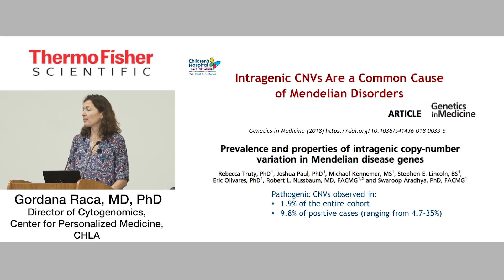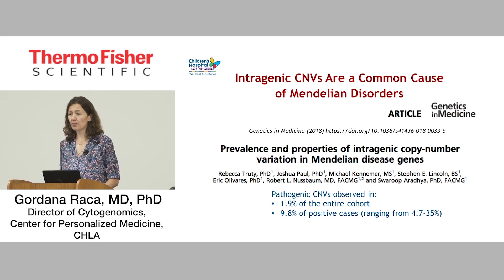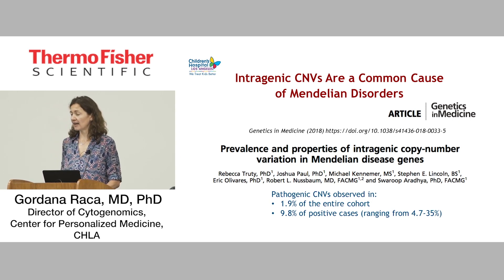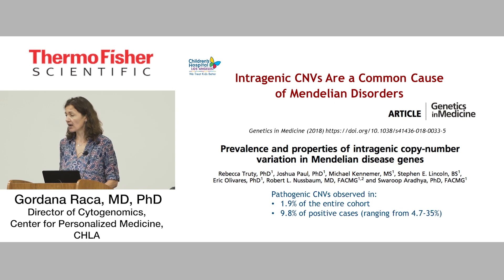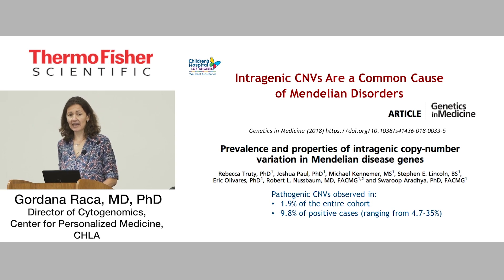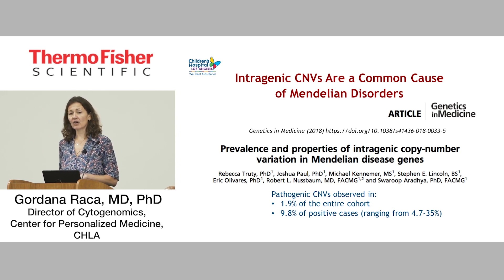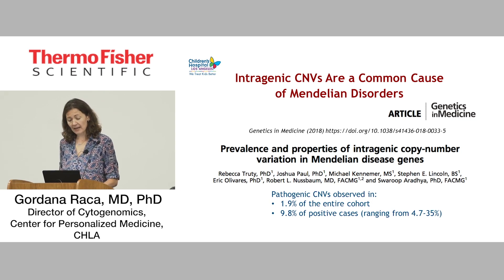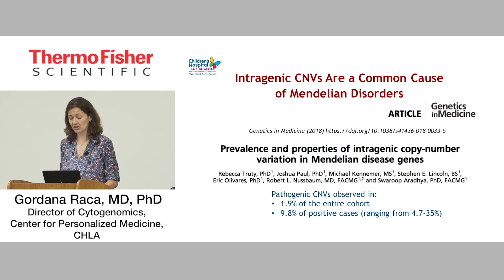We all know that partial gene deletions and duplications represent a very important mutation type causing Mendelian disorders. This recent study from Invitae serves as an excellent reminder of just how common partial gene deletions and duplications are as a cause of Mendelian disorders. They looked at more than 140,000 cases tested by Invitae using different NGS panels, and all their assays also include copy number analysis — deletion duplication analysis. They were able to show that in this entire cohort, almost 2% of the cases had clinically significant deletions and duplications in tested genes.